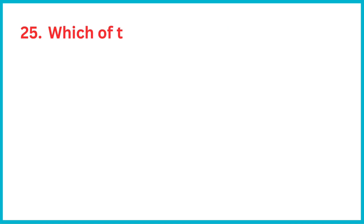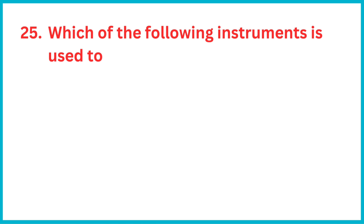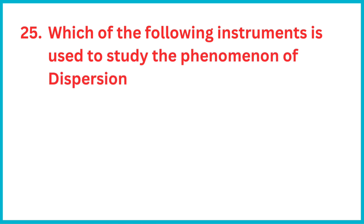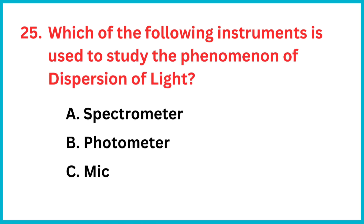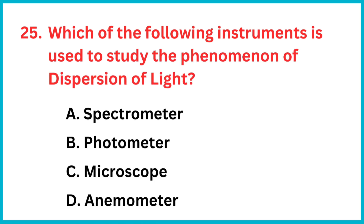Which of the following instruments is used to study the phenomenon of dispersion of light? The correct answer is option A: Spectrometer.